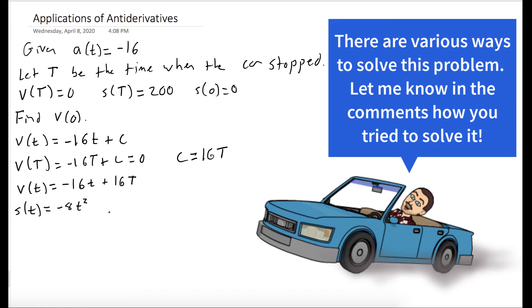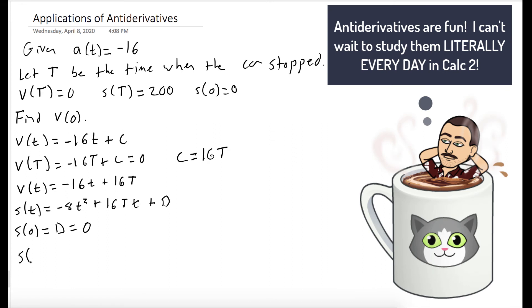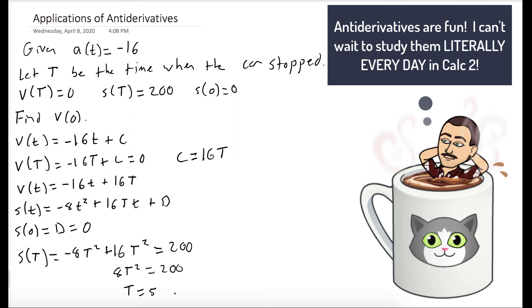We take the antiderivative to get our position function, which is negative 8t squared plus 16 capital T times the variable t plus D. We find that D equals zero by plugging in time zero. S of capital T, which is negative 8T squared plus 16T squared, is equal to 200. We can use this to solve for capital T, and we get T is equal to 5. This tells us that C, which is our initial velocity, is equal to 80.